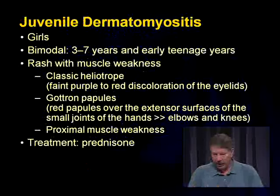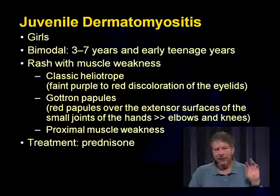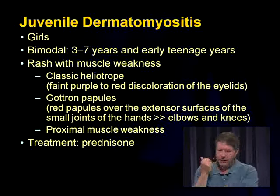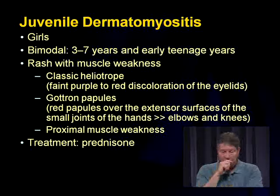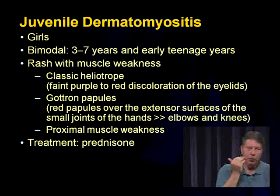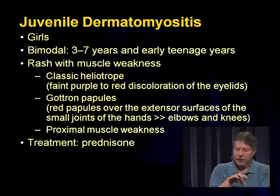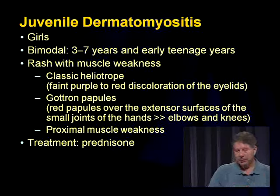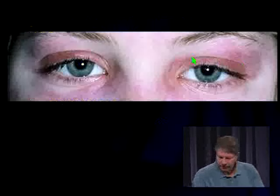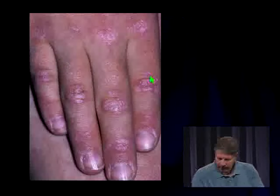Juvenile dermatomyositis is a classic one they love to give on the test. Generally a younger girl, 3–7 years or early teenage. They have the classic heliotrope rash — a purple-to-red discoloration around the eyelids that looks like makeup; the mom may try to wipe it off and can't. Gottron's papules appear on the extensor surfaces of the hands, across the knuckles. The big finding is proximal muscle weakness. Treatment is steroids.